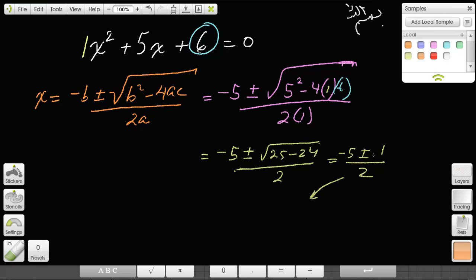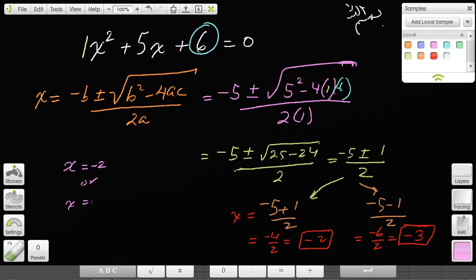Negative 5 plus 1 over 2: -5 + 1 is -4 over 2, which is -2. That's one answer. And -5 - 1 is -6 over 2, which equals -3. That's the second answer. So x = -2 or x = -3. Those are the two potential answers for this question.